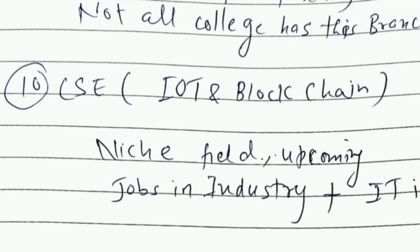CSE with IoT and Blockchain is also a niche but upcoming branch because of the industry application of the Internet of Things and blockchain — which powers cryptocurrency. Blockchain also has many other applications beyond crypto. You can get jobs in manufacturing industries, any sort of industry, plus IT — so it is a good option, though it is available in a lesser number of colleges compared to other branches.